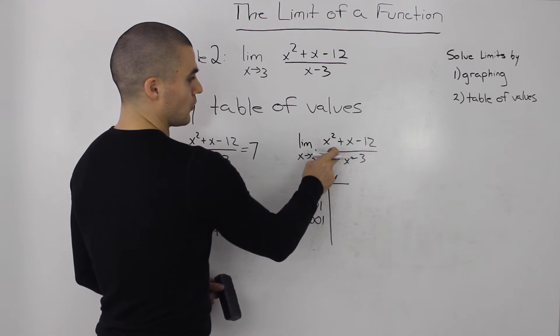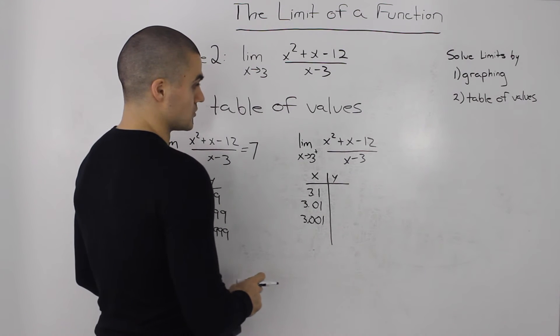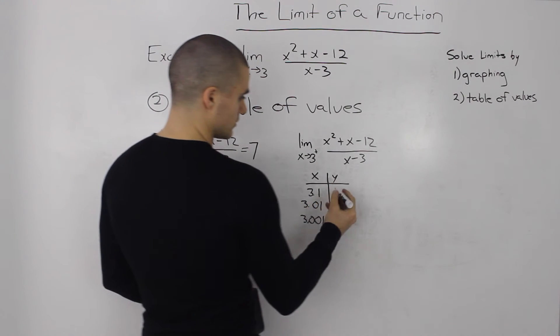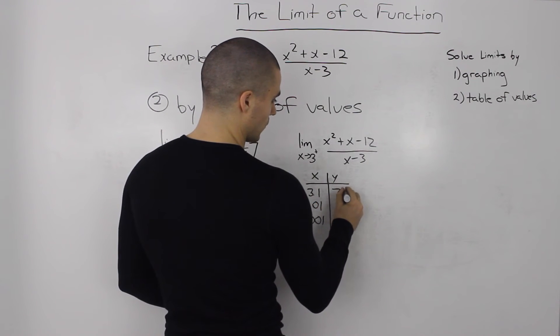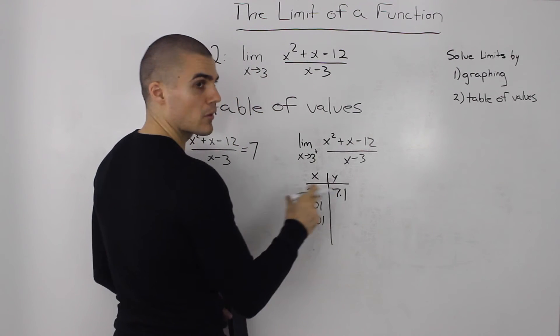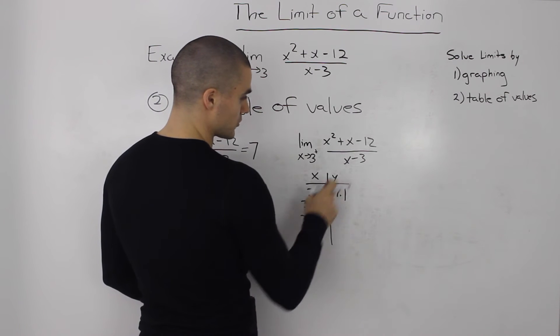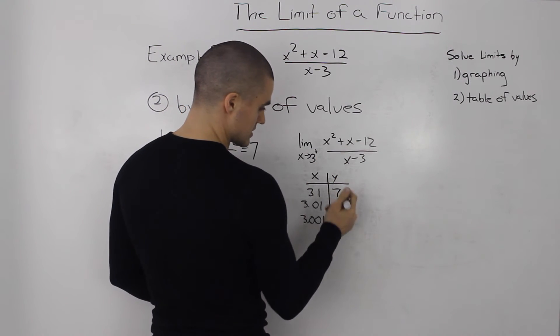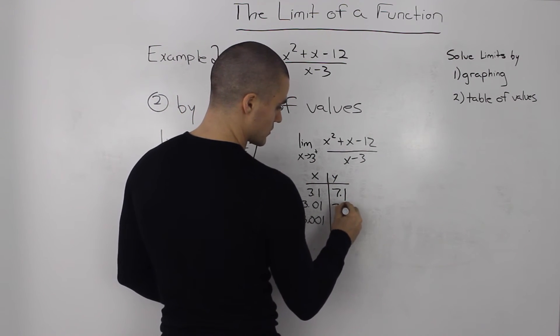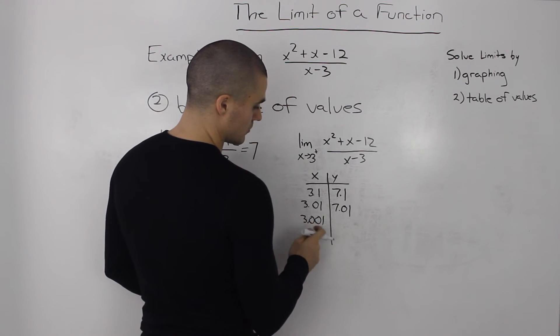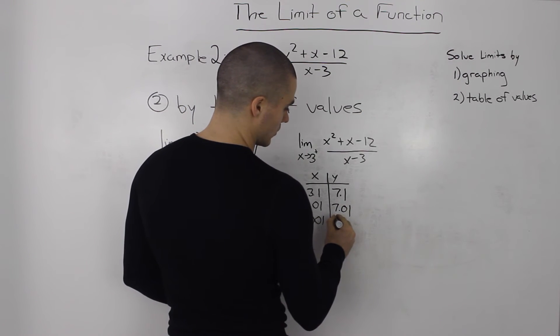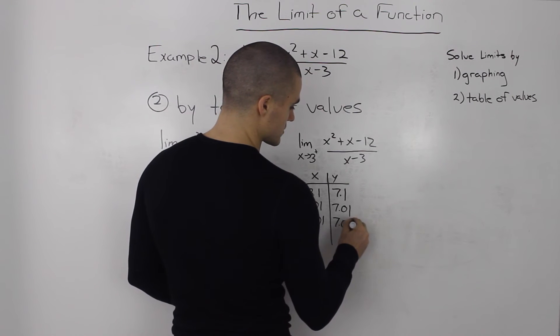If we plug in 3.1 into our function, we'll get 7.1. Again, be careful with brackets on your calculator. When we plug in 3.01, we'll get 7.01. And if we plug in 3.001, we'll get 7.001.